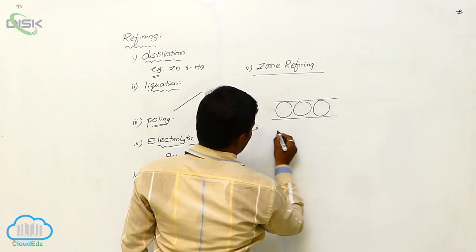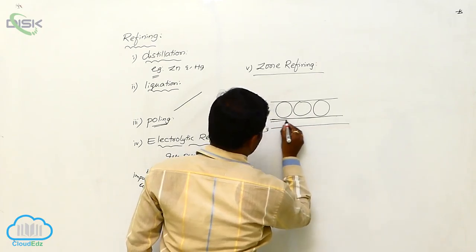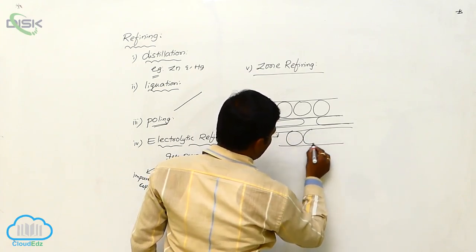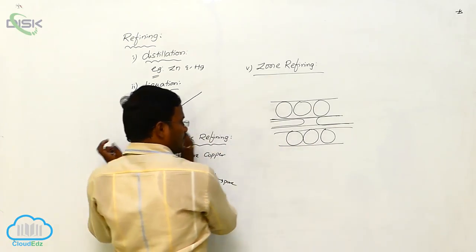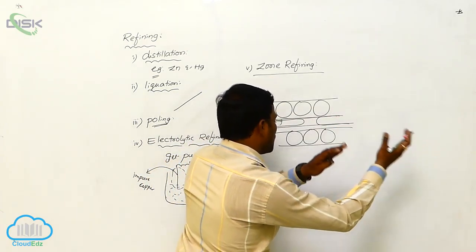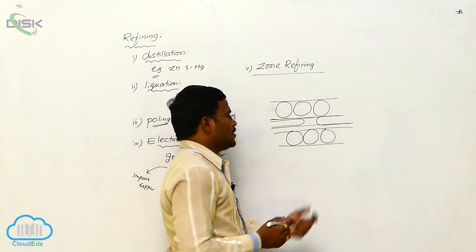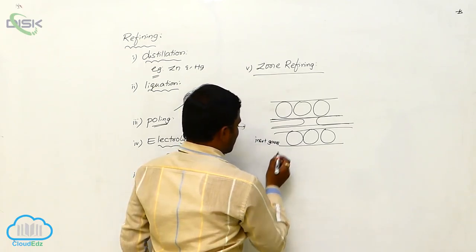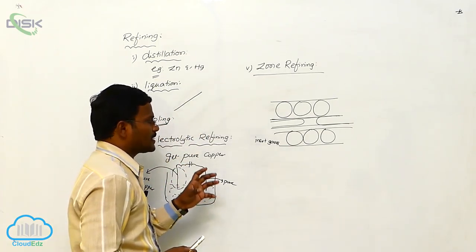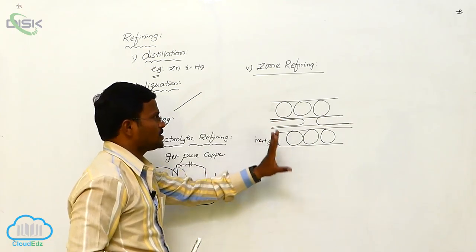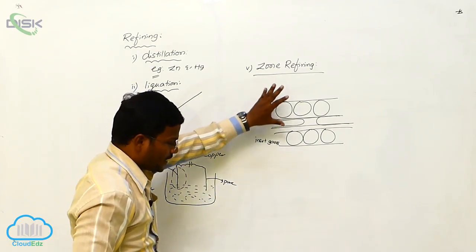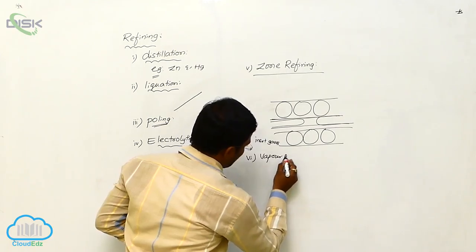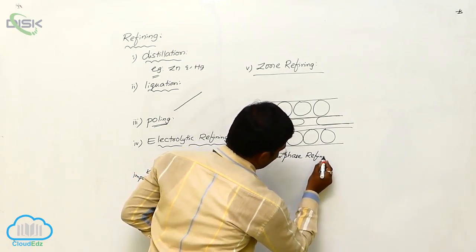The next method is zone refining. In zone refining, the metals are passed through high-temperature zones using a belt that moves from one side of the equipment to the other. Using inert gases, the impurities present in the metals can evaporate or escape. This type of purification is called zone refining.